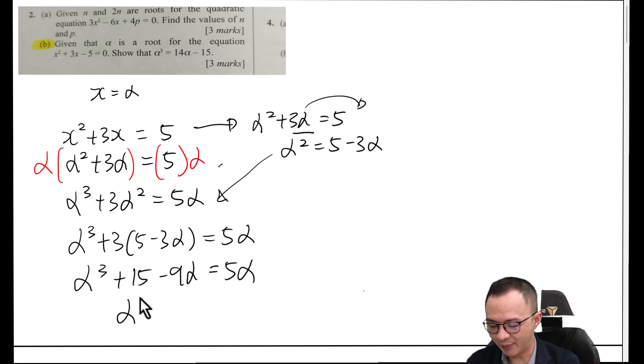Then I should be able to get my answer here. Minus 5 alpha moves to the other side and becomes plus 9 alpha. 9 plus 5 is 14 alpha. And plus 15 moves to the other side, I will get minus 15. Then I will easily get my answer.